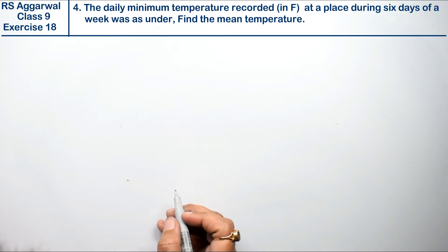Let's do question number 4 of exercise 18a, mean, median and mode of ungrouped data. Question number 4 is the daily minimum temperature recorded in Fahrenheit at a place during 6 days of a week are as under.